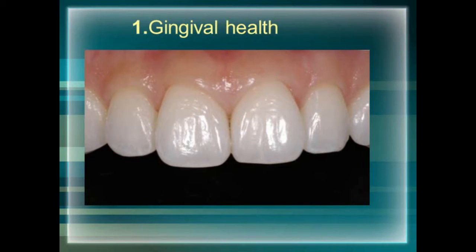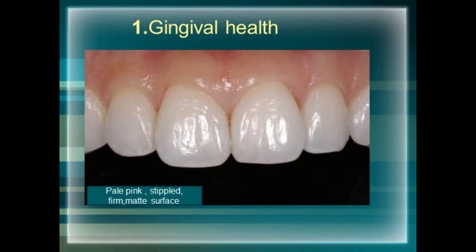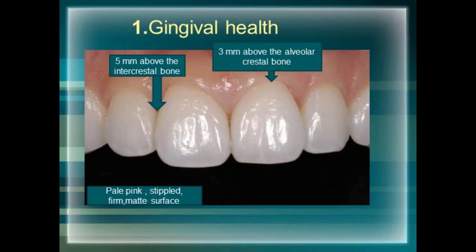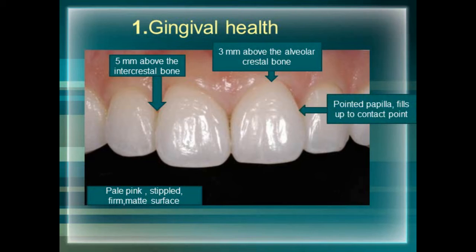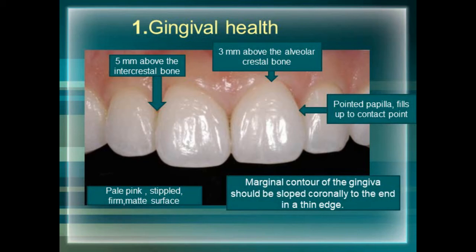Gingival health is of utmost importance for a proper aesthetic smile. Prior to any treatment you must assess the gingival health. A healthy gingiva will be pale pink with a stippled appearance and a firm matte surface. The gingiva is positioned 5 mm above the intercrestal bone interdentally, and 3 mm above the alveolar crestal bone labially. The interdental embrasures should be filled with a pointed papilla reaching up to the contact point, otherwise black triangles will be created. The marginal contour of the gingiva should slope coronally to the end and have a very thin edge.